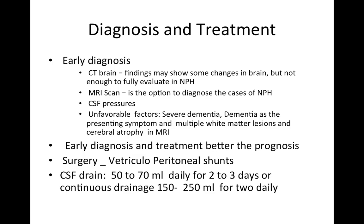It is always important to have early diagnosis and treatment for better prognosis. Ventriculoperitoneal shunt is commonly done for patients with NPH. The CSF drain test involves removing 50–70 ml of fluid daily for 2–3 days, or the patient can be put on continuous drainage at a rate of 150–250 ml per day for 2 days, and there could be improvement in NPH symptoms. This is a sensitive diagnostic test, but it is an invasive procedure.